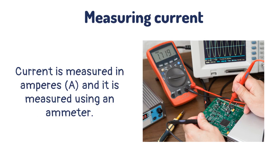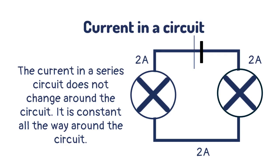Current is measured in amperes and it is measured using an ammeter. The current in a series circuit does not change around the circuit — it is constant all the way around.